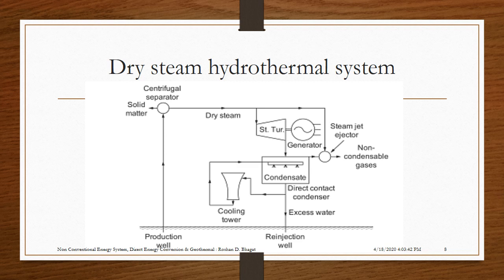The figure shows the dry steam hydrothermal system. This system is similar to a thermal power plant used for generation of electricity. Instead of using coal as fuel, heat from the earth is utilized for generating steam. The purpose of the centrifugal separator is to separate out foreign particles coming out with the steam, which may reduce the life of the turbine if allowed to pass through.